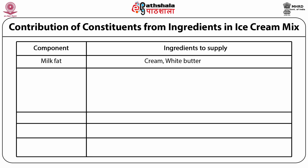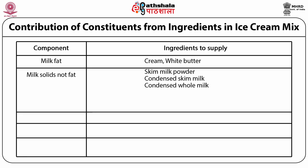The second component is milk solids not fat, or MSNF. Generally in ice cream we keep around 11 to 12.5% MSNF. Since milk contains only around 8.5 to 9.5% SNF, we need a concentrated source of MSNF. Ingredients which can supply MSNF include skim milk powder, condensed skim milk, and condensed whole milk - though condensed whole milk also contributes fat, so quantities of other fat sources must be adjusted accordingly.